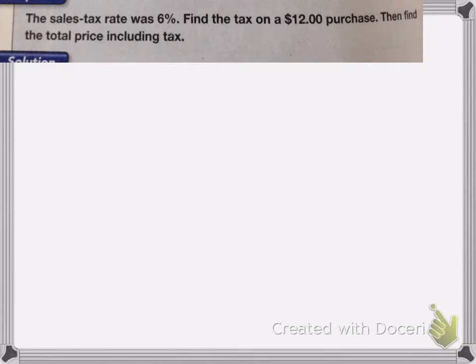And this one's tricky with sales tax. So it wants us to find, so it gives us the sales tax is 6%. It wants us to find the tax on a $12 purchase and then find the total price, including the tax. So first, we need to figure out how much we have to pay extra with sales tax. And to do that, we're going to multiply 6% by 12.